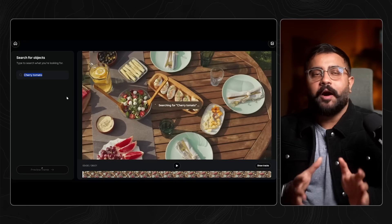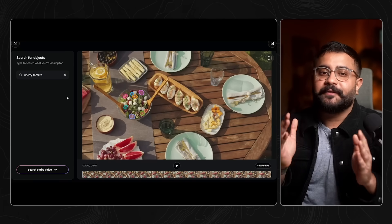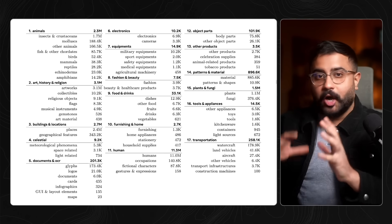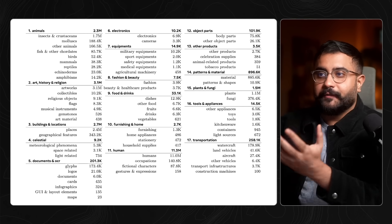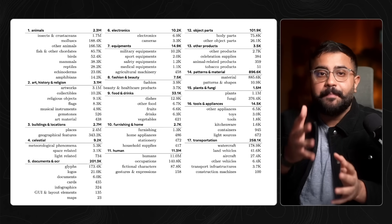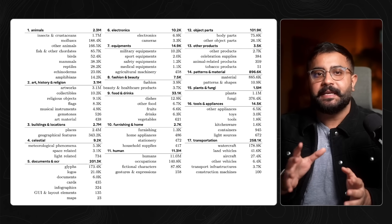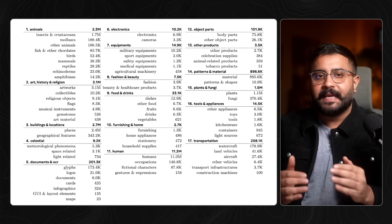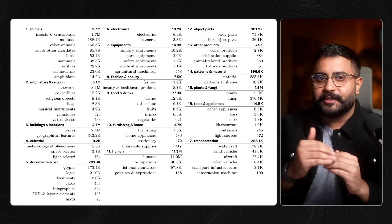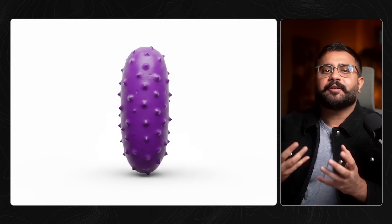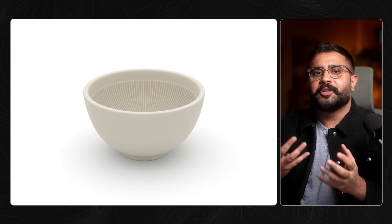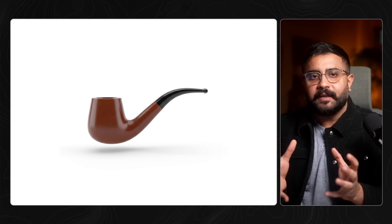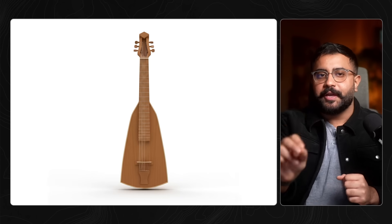You can describe whatever you want in plain language and the model just finds it. Meta built a massive ontology of concepts — you can see it over here. They actually mined Wikipedia to create a dictionary of relationships between all these concepts, and really focused on the long-tail distribution: the rare stuff, the edge cases, the things that don't show up very often but matter when they do.